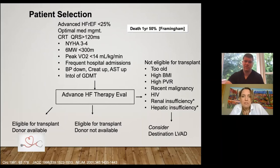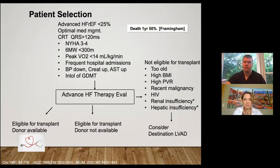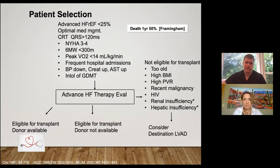Additionally, patients who are NYHA class 3 to 4 — those with symptoms at rest or with mild activity. A six-minute walk test of less than 300 meters, and a peak VO2 under 14 mils per kilo per minute from a cardiopulmonary exercise stress test. Also patients having frequent hospital admissions, becoming more hypotensive, with creatinine and liver enzymes trending up. This population has a one-year death rate of 50% per Framingham studies.